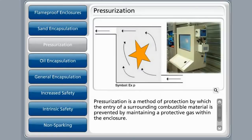Pressurization is a method of protection by which the entry of surrounding combustible material is prevented by maintaining a protective gas within the enclosure. This is generally accomplished by creating a higher pressure within the enclosure than the surrounding atmosphere. This protective method would be used for any power-operated equipment.